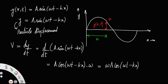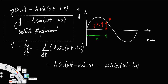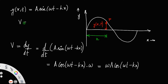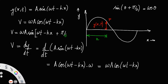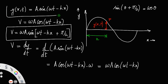So this is the particle velocity: v = ω·a·cos(ωt − kx). Now, since sin(θ + π/2) = cos θ, this cos(ωt − kx) can be written as v = ω·a·sin(ωt − kx + π/2). So this is the expression for velocity, and the earlier equation is the displacement.